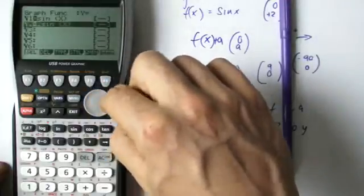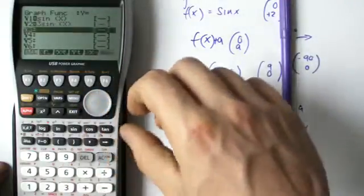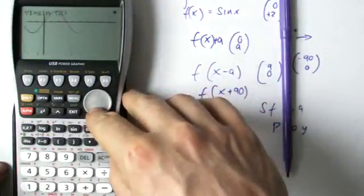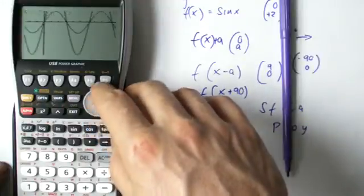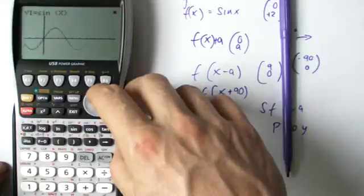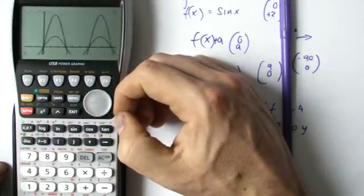If I change that number now to a 3, it's going to get 3 times as high and 3 times as low. You can see that minimum point has now gone to negative 3. Maximum point has now gone to positive 3. Hopefully you can see what's happening there.